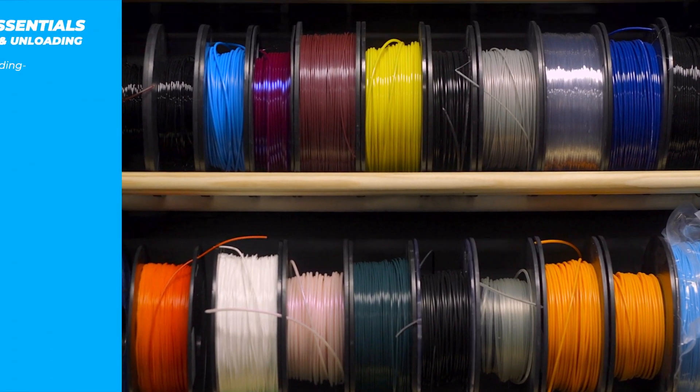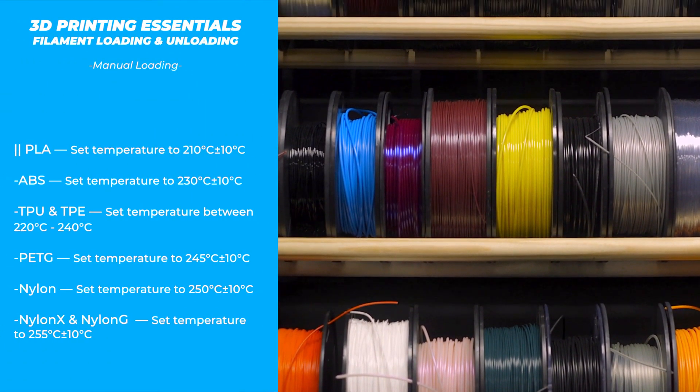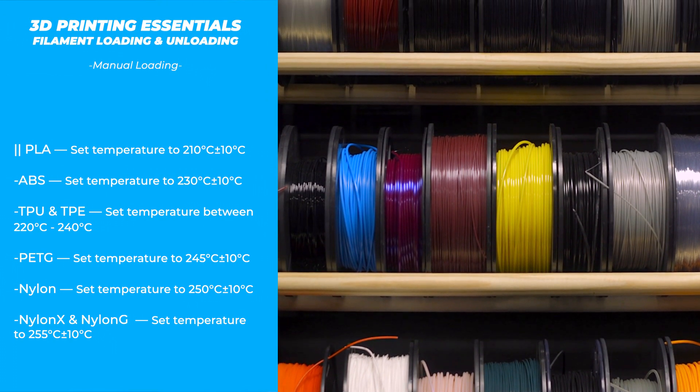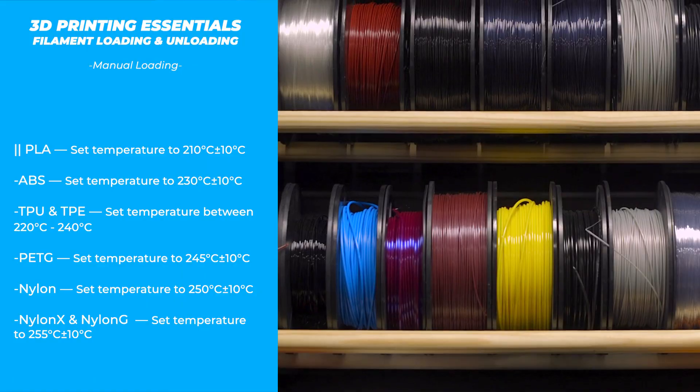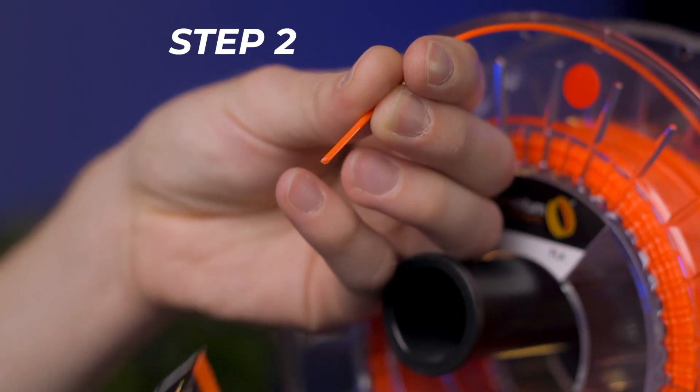Filament printing temperatures can vary widely between filament types and brands. You can typically find the accurate printing temperatures specific to your filament either on the spool or on the manufacturer's website. Step 2: Snip the end of the filament with flush cutters at an angle.